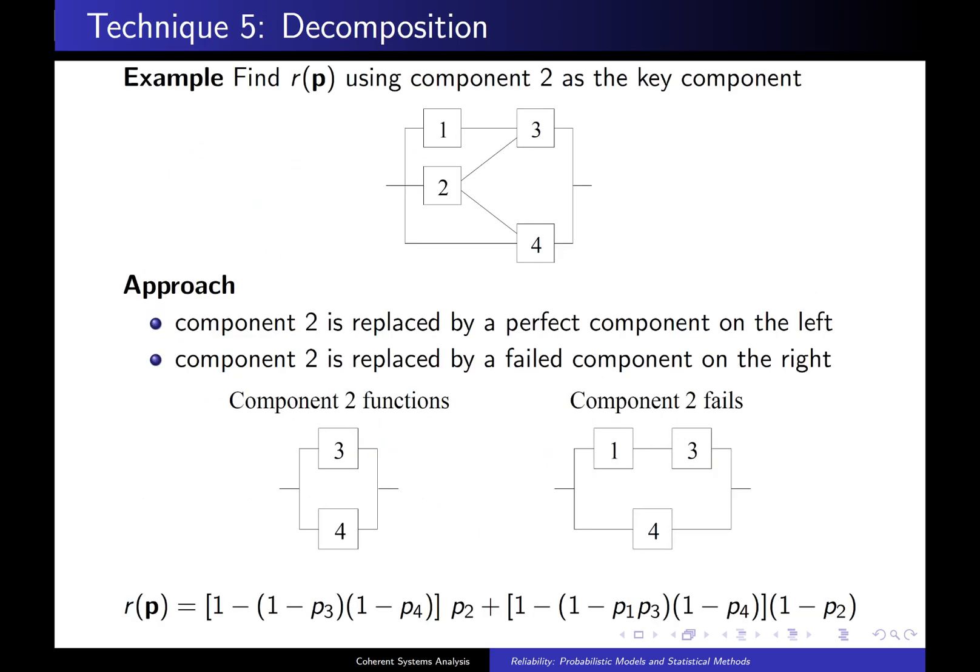Here's an example. Find r(p) using component 2 as the key component. So here's the approach. First of all, we consider component 2 replaced by a perfect component. The way I like to think about that is I replace that component 2 by just a line. So now we have a line that looks like that.